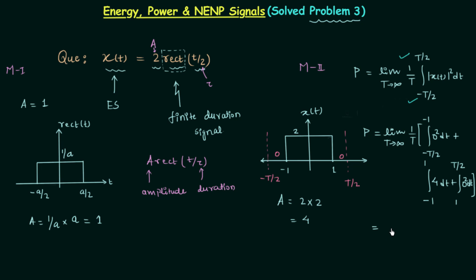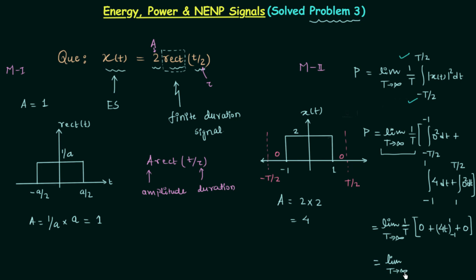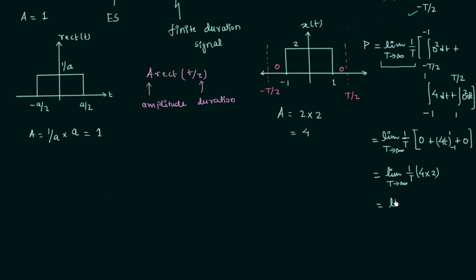Performing the integration: the zero terms vanish. Integrating 4 from -1 to 1 gives 4t evaluated from -1 to +1, which equals 4 × 2 = 8. So we have P = limit T→∞ of (1/T) × 8, which simplifies to 8/T.